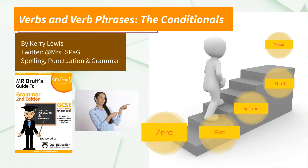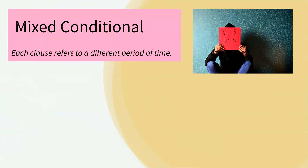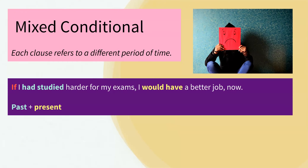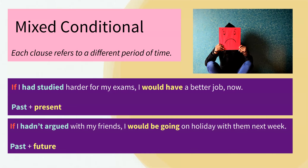With the conditionals that we've looked at so far, each sentence has talked about one period of time — it might be the past, the present, or the future. With mixed conditionals, each half of the sentence, or clause, is about a different period of time. For example: 'If I had studied harder for my exams' — that's the past — 'I would have a better job now' — which is the present. 'If I hadn't argued with my friends' — the past — 'I would be going on holiday with them next week' — the future.